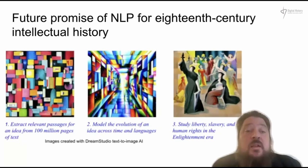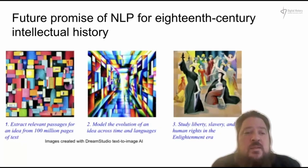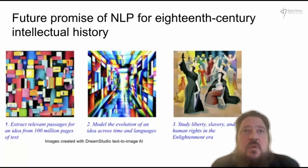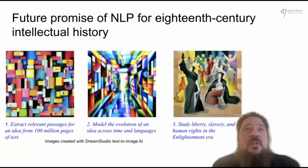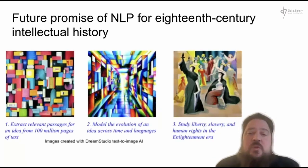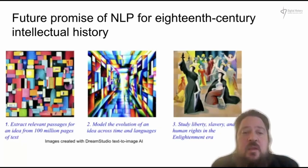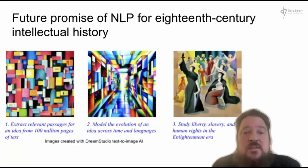To make things very simple: what we will do in the near future is extract all the relevant passages from a particular idea from 100 million pages of text or more, and then model the evolution of an idea across time and across languages. Language is just one boundary among others. We will be able to study liberty, slavery, and human rights in the Enlightenment era. The real change would be from words to meanings — something I and my colleagues think will change drastically in the near future.